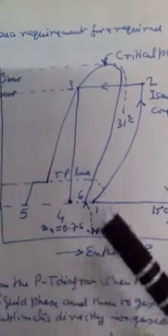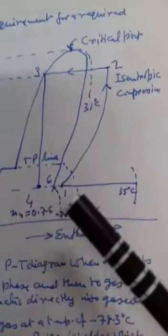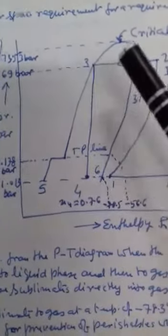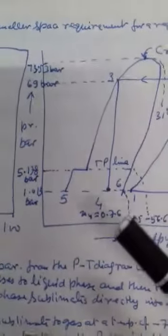Isentropic compression is taking place from 1 to 2, then 2 to 3 is condensation, 3 to 4 is expansion, and 4 to 5 is evaporation or solidification I should say.